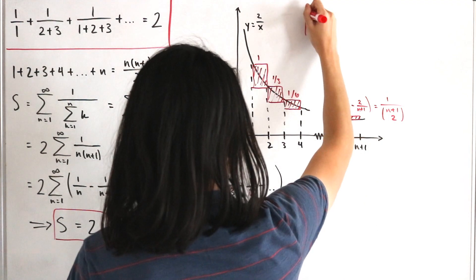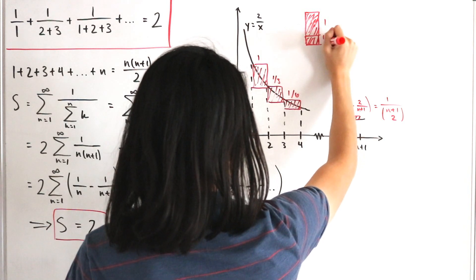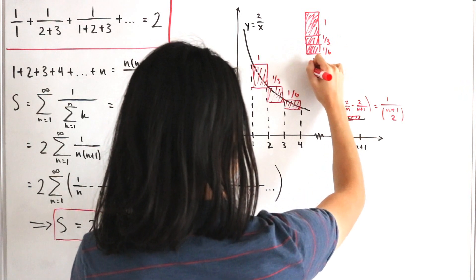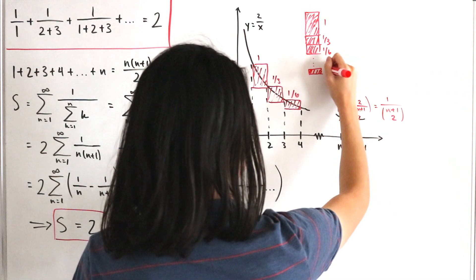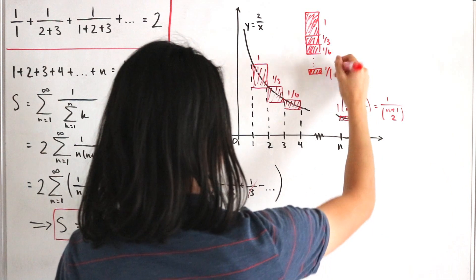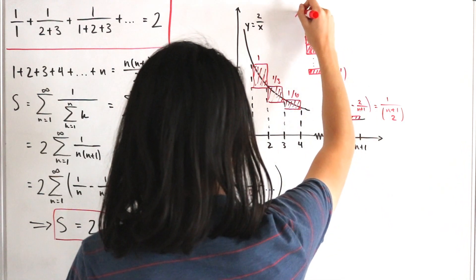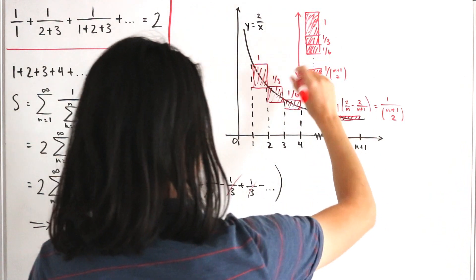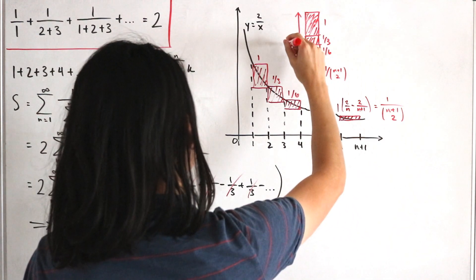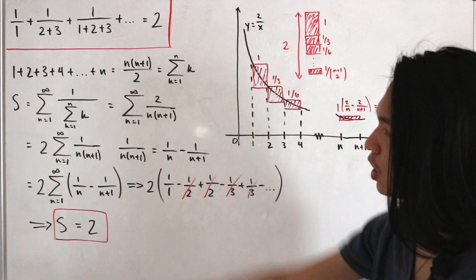Taking all these rectangular areas together — area one, area one over three, area one over six, and so on, all the way to one over the binomial coefficient n plus one choose two — when you sum all of these up, the total area of all the rectangles comes out to two, giving us our visual proof.